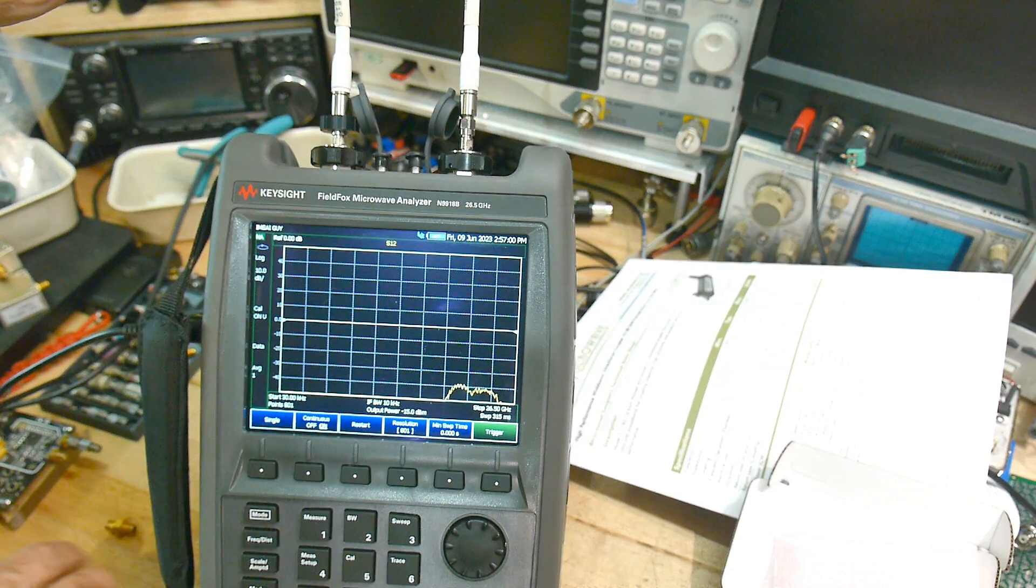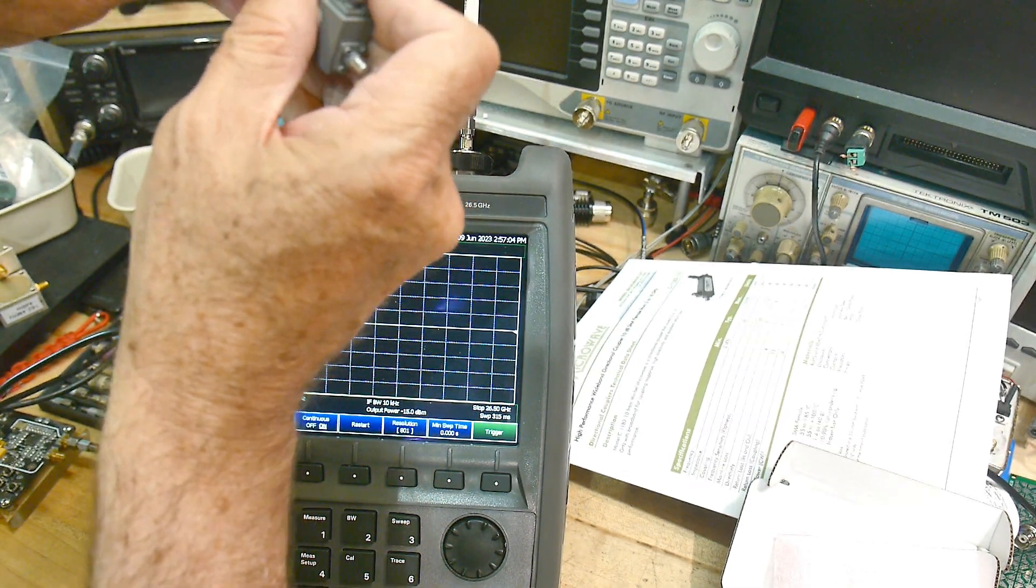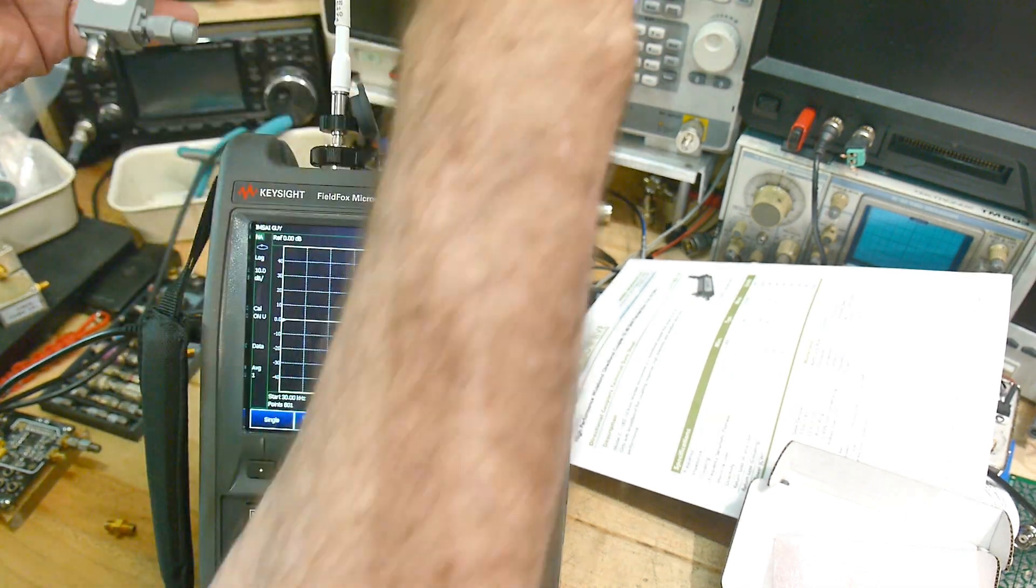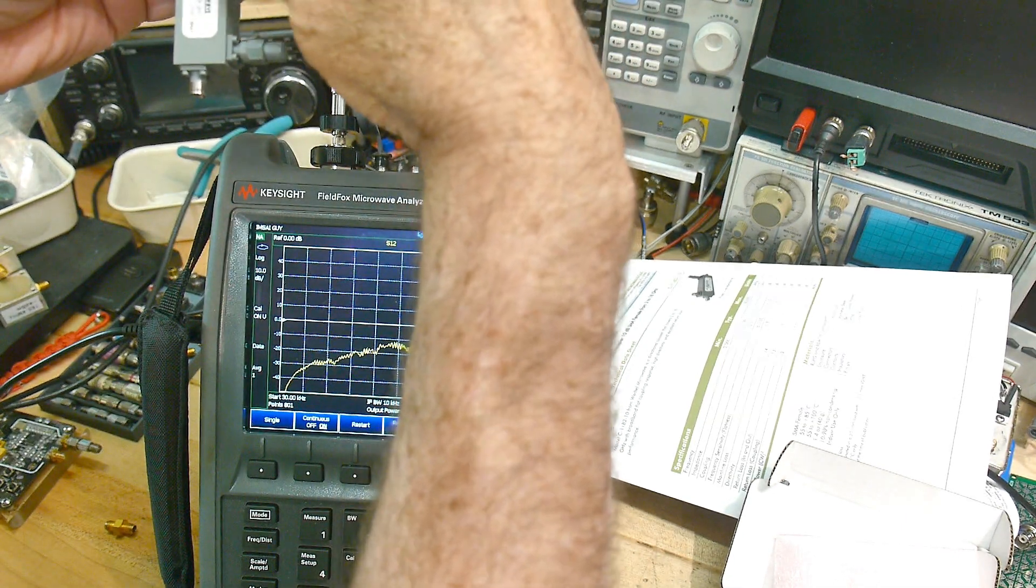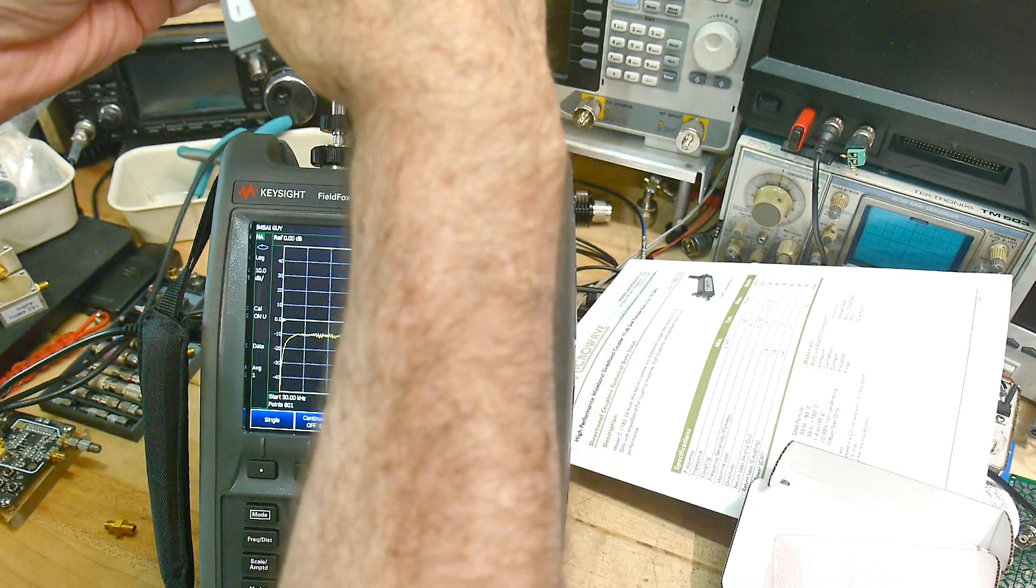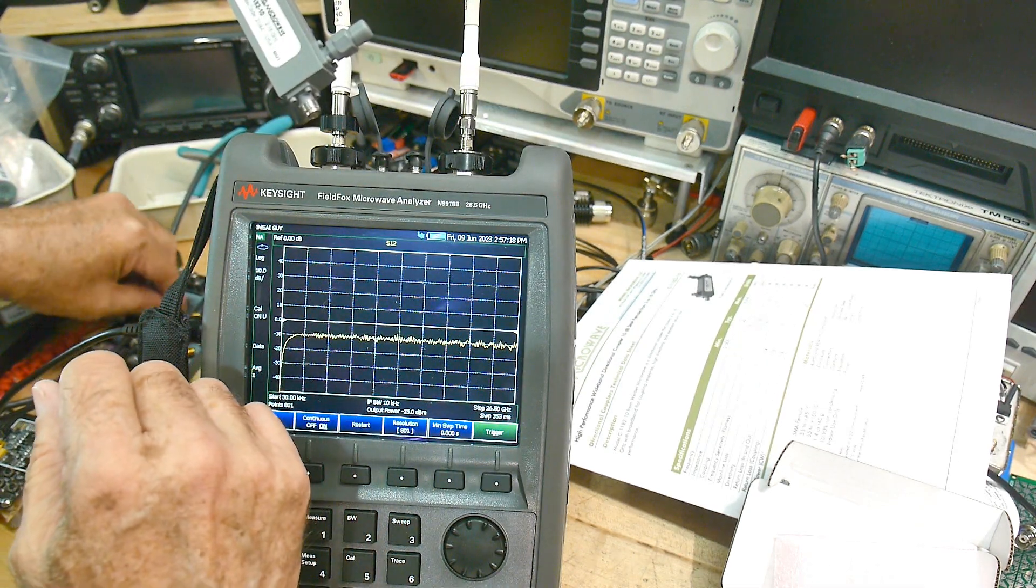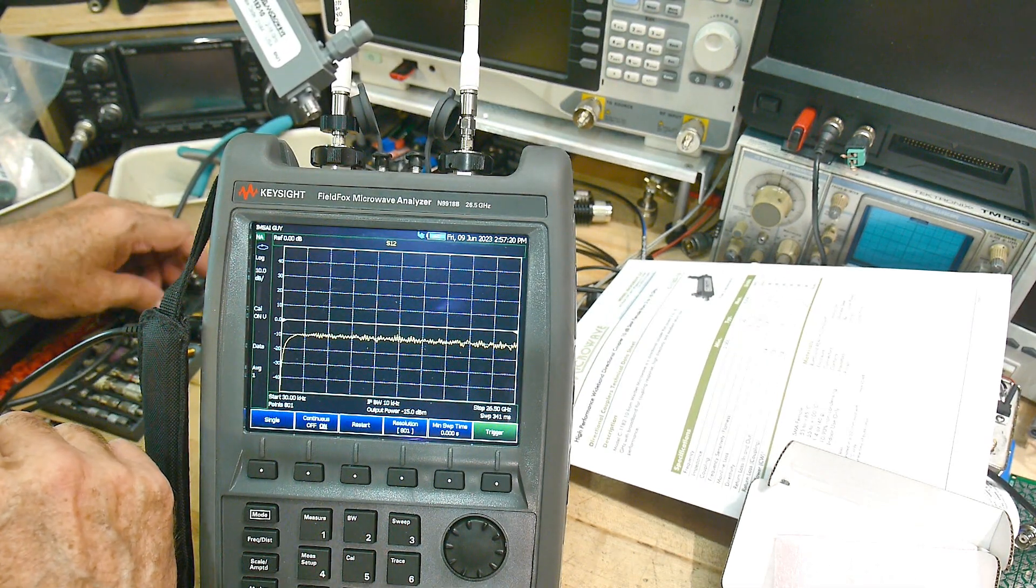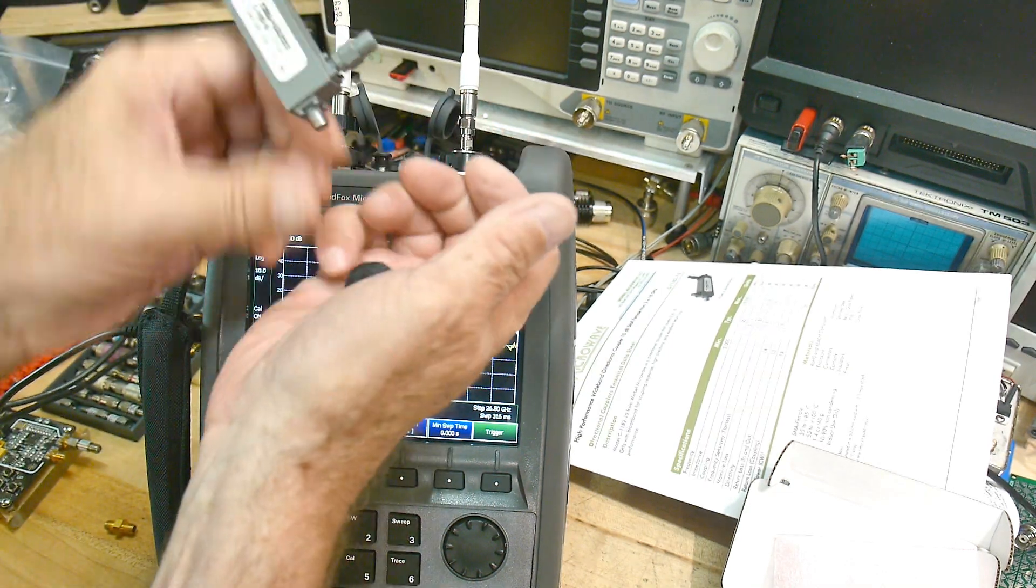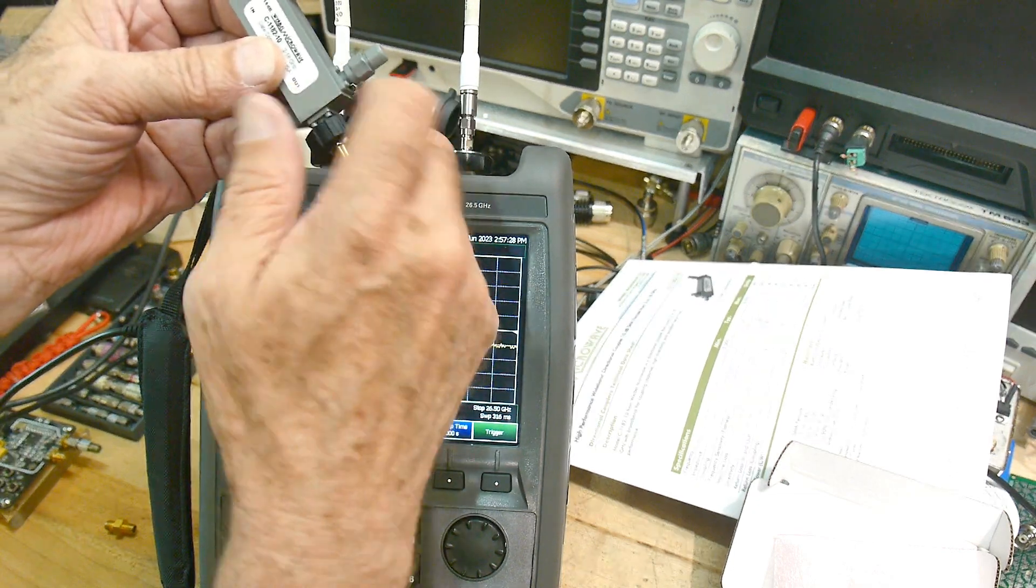And let's measure the 10 dB spec. We should be getting 10 dB right here. And we will terminate the unused port with a 50 ohm load. 50 ohm load, there we go.